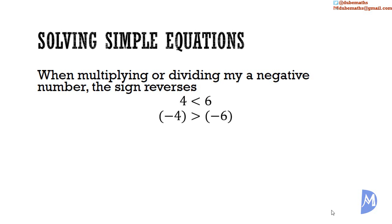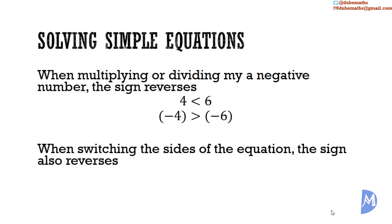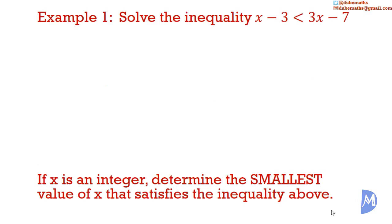When changing around the equation — that is, switching the sides of the equation — the sign also reverses. For example, 7 is less than or equal to 10; thus, 10 is greater than or equal to 7. Example 1: Solve the inequality x minus 3 is less than 3x minus 7.